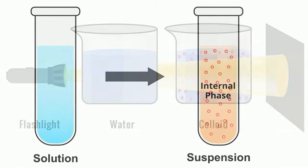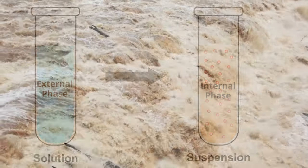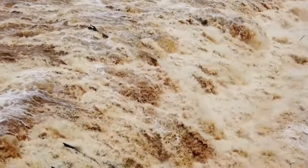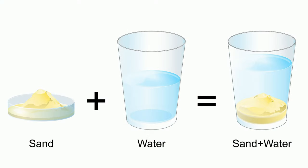The solute particles are called the internal phase, and the fluid is called the external phase. Examples would be muddy water and sand in water. The sand does not dissolve into the water but is mixed into it, and over time it will settle.